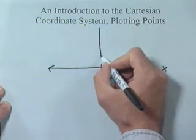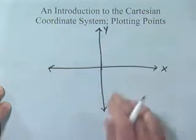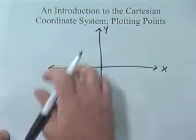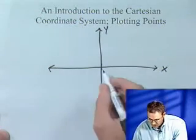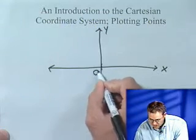And then we put a vertical number line, we'll call that the y-axis. This is going to be called our Cartesian coordinate system, and the point right here in the middle, the starting point if you like, we'll call that the origin.